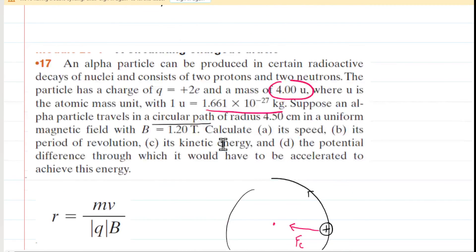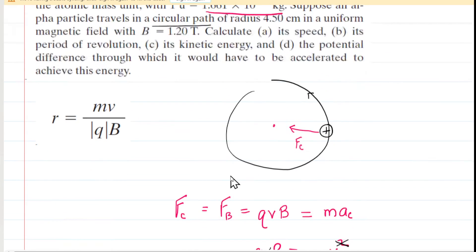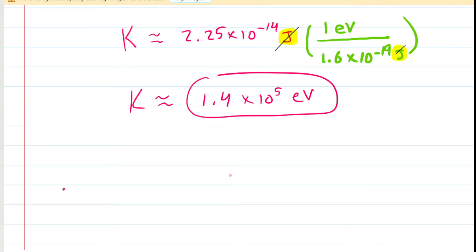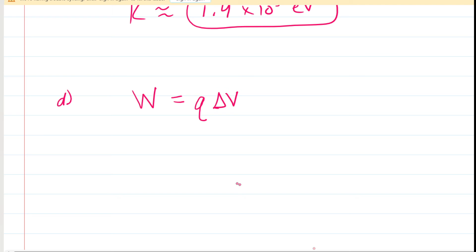In Part D, we are asked to find the potential difference through which it would have to be accelerated to achieve this energy. So we need some kind of relationship between potential difference, the charge, and the energy. Perhaps in an earlier chapter, you've learned that the work done to accelerate a charged particle across a potential difference is equal to the charge times that potential difference. In this case, the work that's being done is used to give the charged particle its kinetic energy.